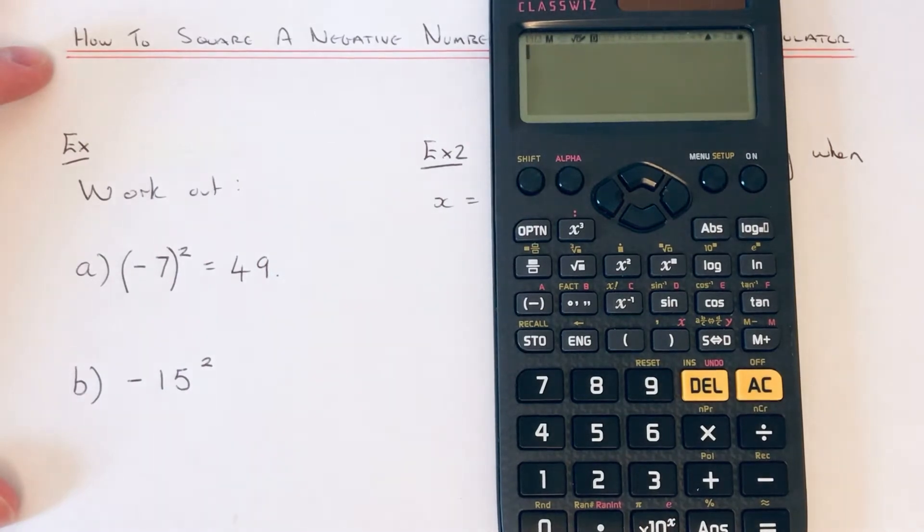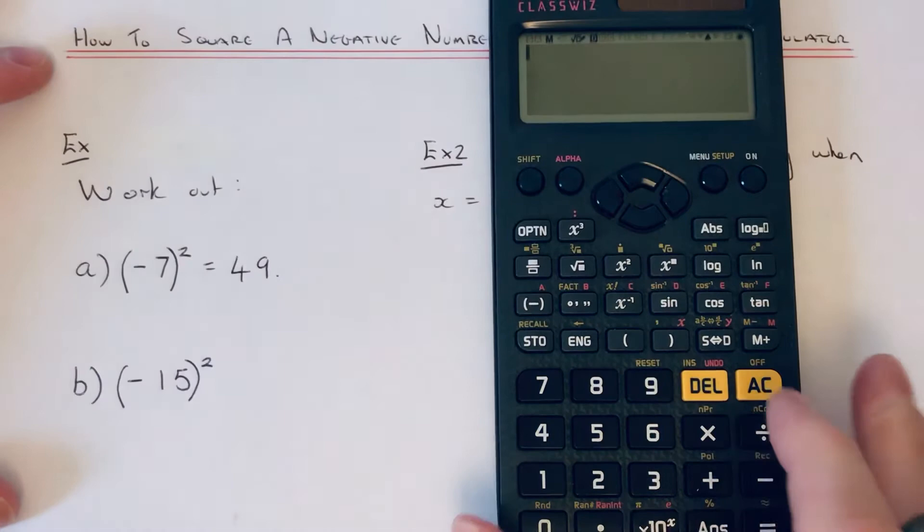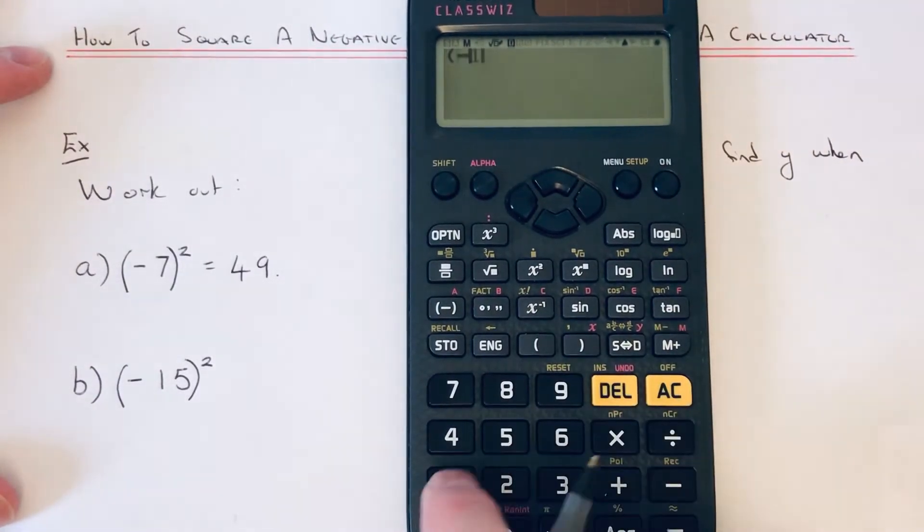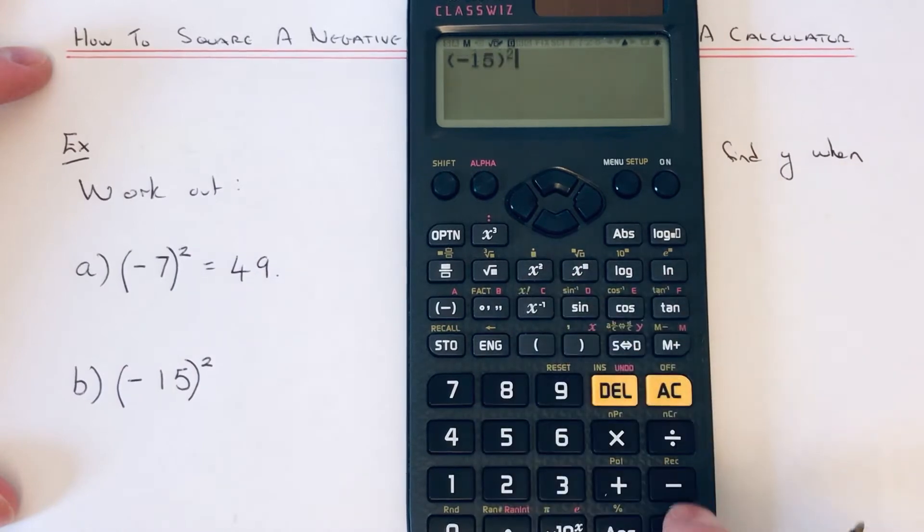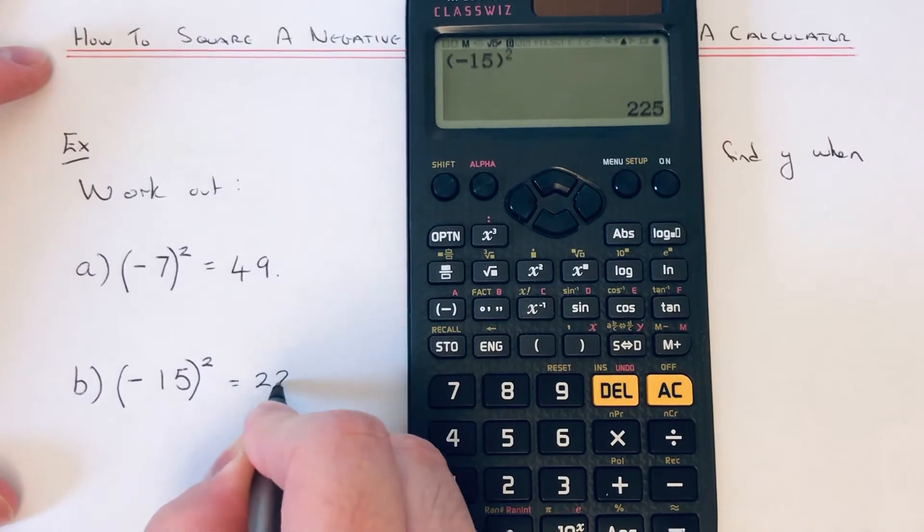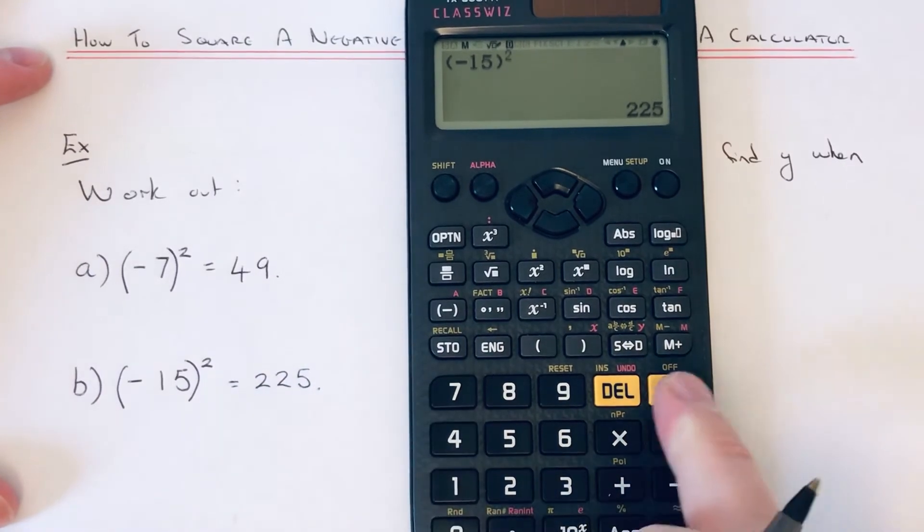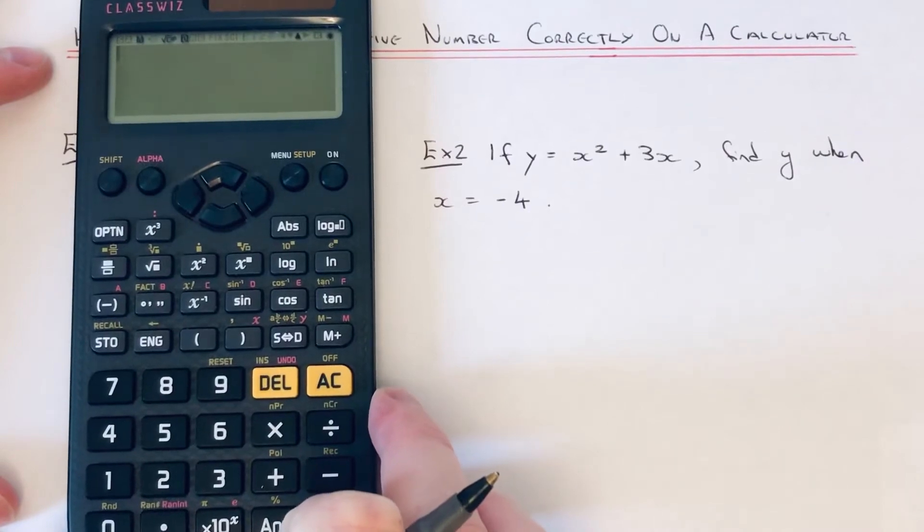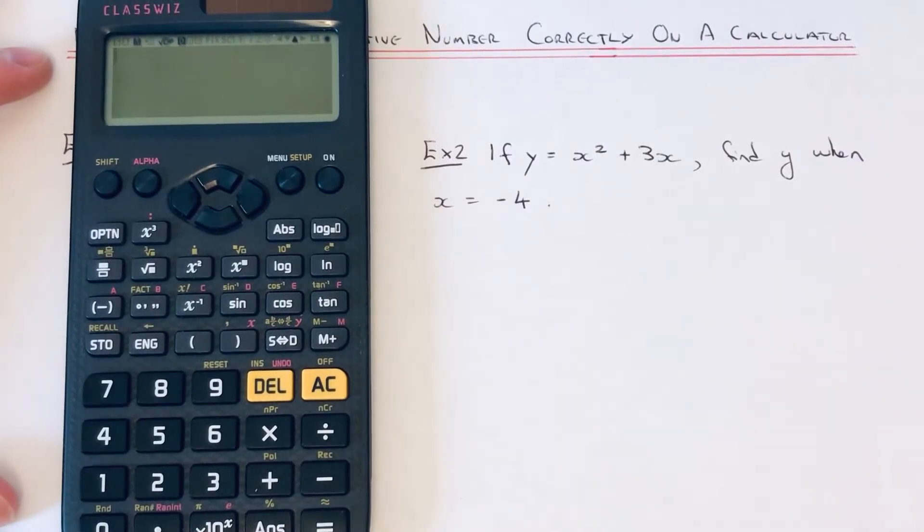Let's do one more example. This time we've got minus 15 squared. Again, we just need to remember to put a bracket around the minus 15, and that's 225. And let's do one final example.